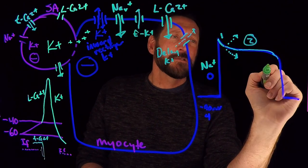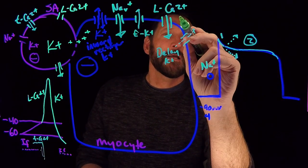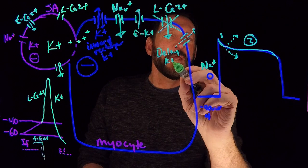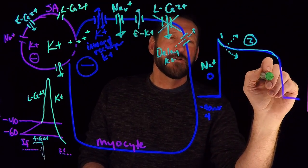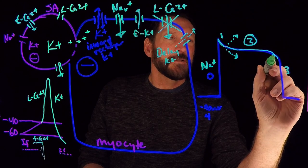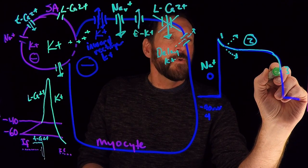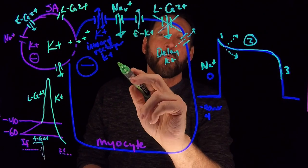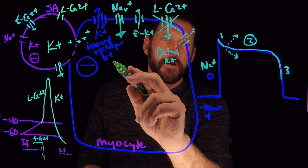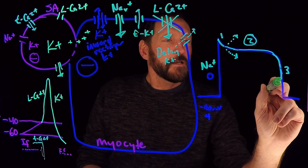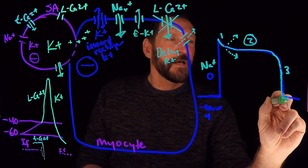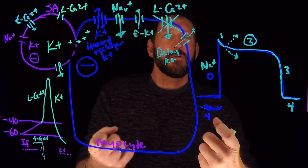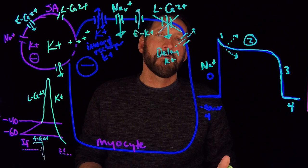When the calcium channels close, only potassium is moving out, taking its positive charge — this is phase 3 repolarization. The delayed potassium channels begin to close, and the inward rectifier potassium channels start to pop back open, bringing the cell all the way back to phase 4. One complete heartbeat is done, and the myocyte now waits for the SA node to trigger the next beat.